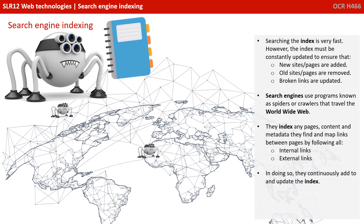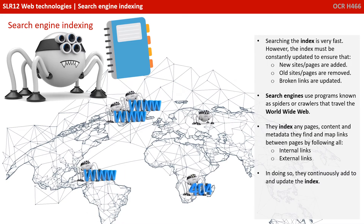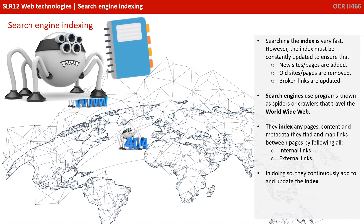Searching the index is very fast. However, the index must be constantly updated to ensure that new sites and pages are added, old sites are removed, and broken links are updated. Search engines use programs known as spiders or crawlers that travel the World Wide Web. They index any pages, content and metadata they find, and map links between pages by following all internal and external links. In doing so, they continuously add and update their index.